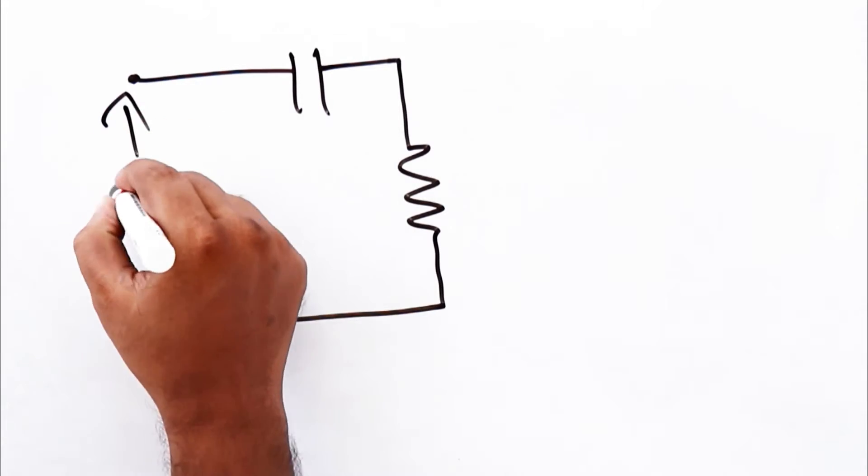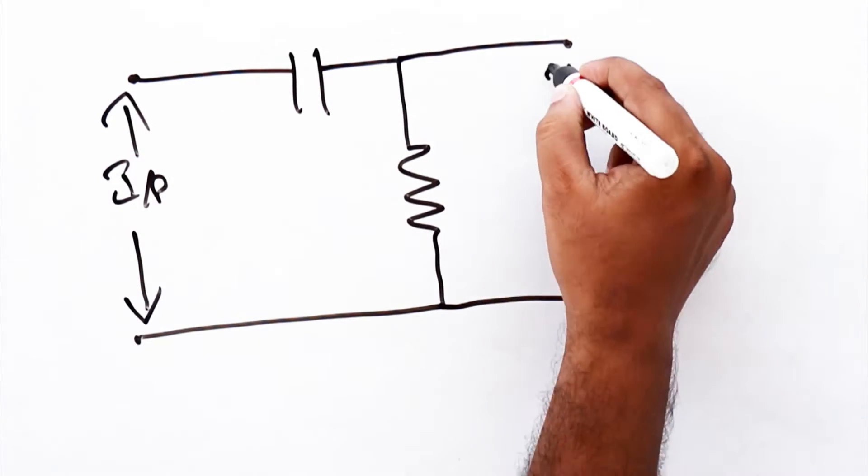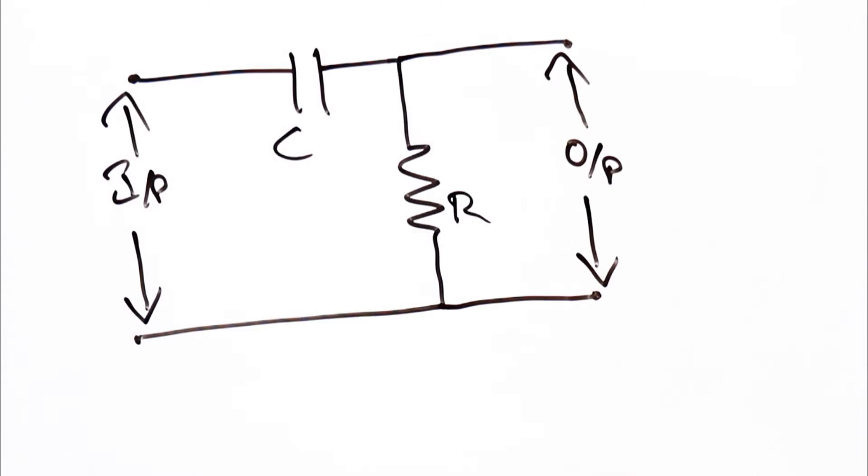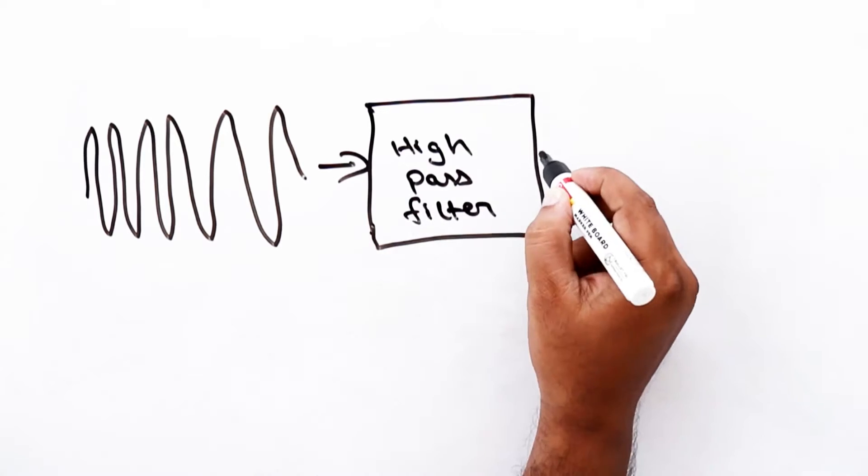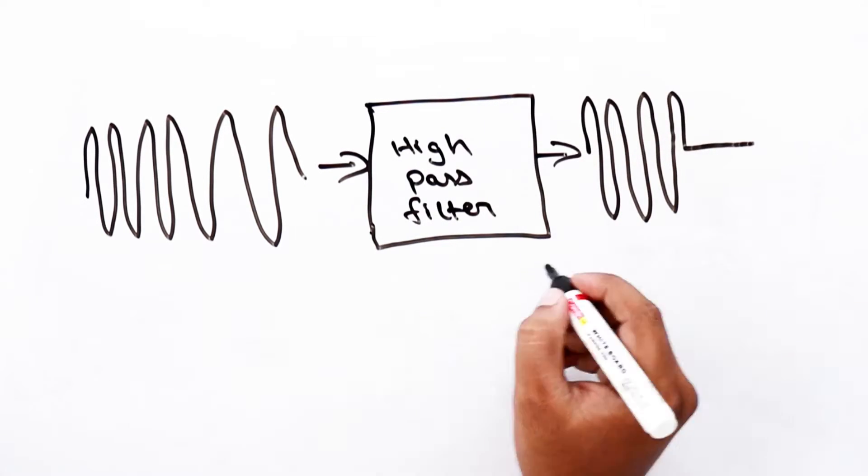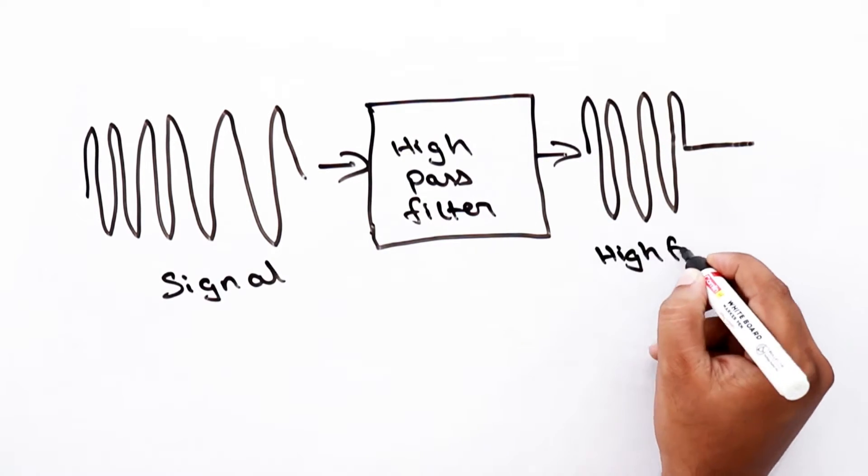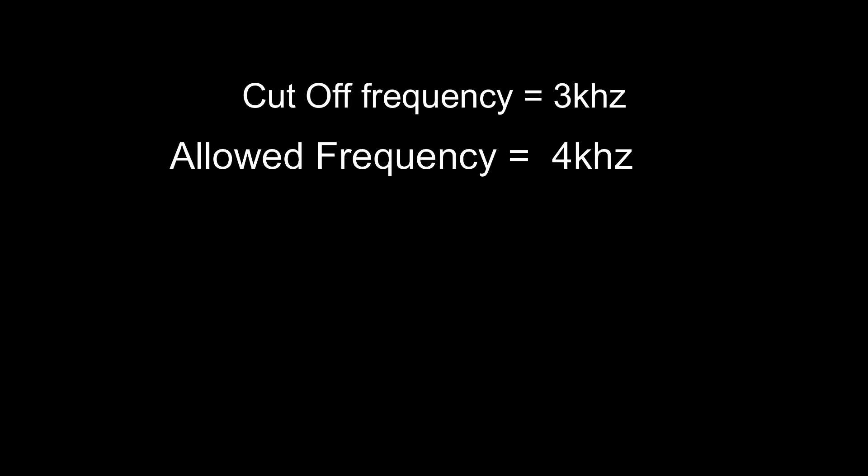On the other hand, high-pass filter can be constructed using resistor and capacitor in this way. It allows only the high-frequency signal which is the signals with frequency higher than cut-off frequency to pass through and blocks the low-frequency components in the incoming signal. Say, for example, we have cut-off frequency of 3 kHz. This filter only allows signal frequency more than 3 kHz and blocks the frequency less than 3 kHz.